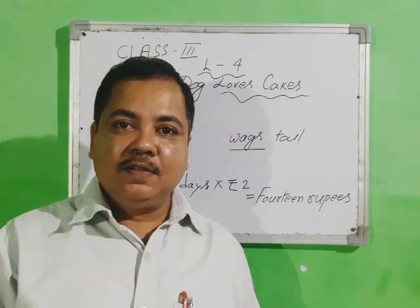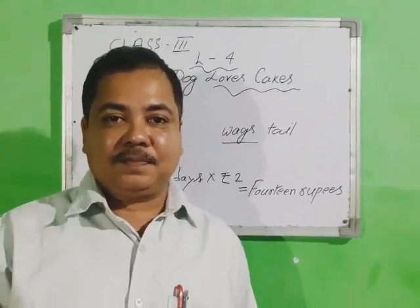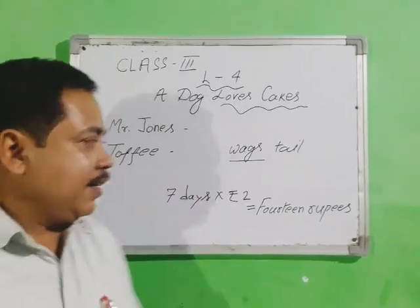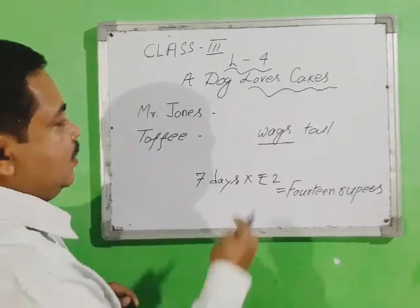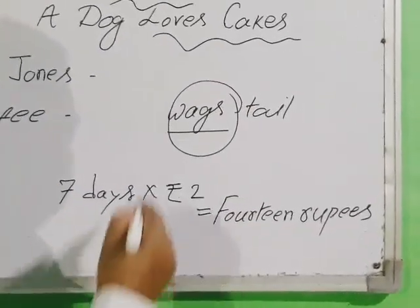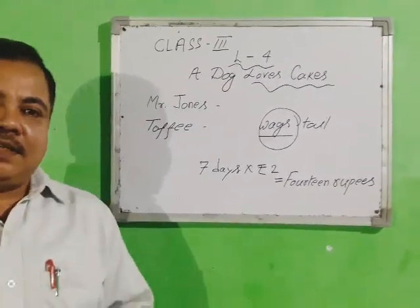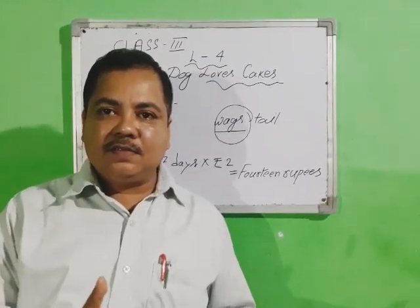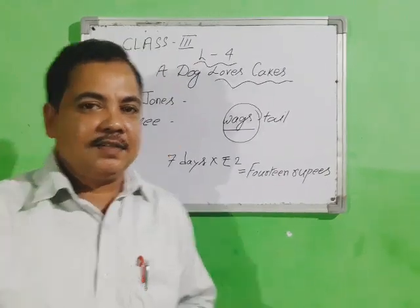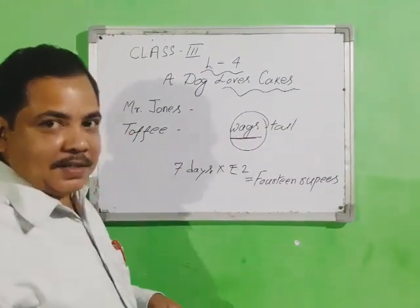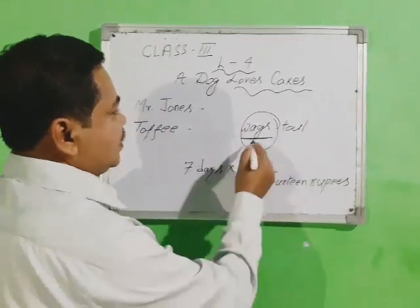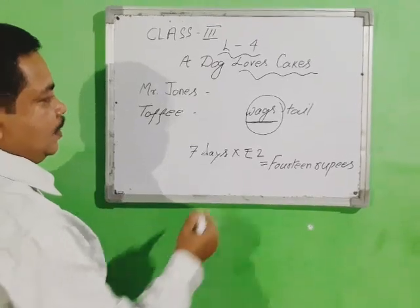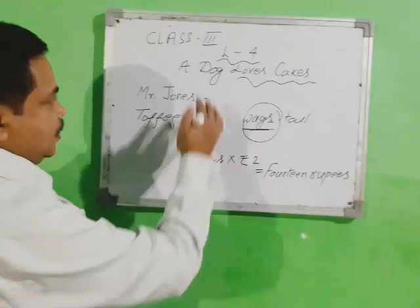For Class 3 students, there is one new word: 'wags.' Wags means the movement of the tail of the dog. When someone calls the dog, the dog wags its tail. That movement of the tail is called 'wags.'